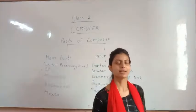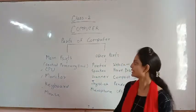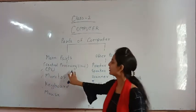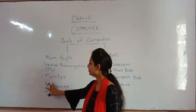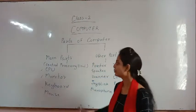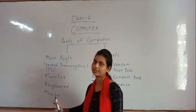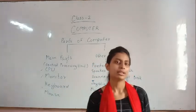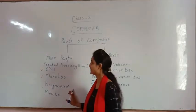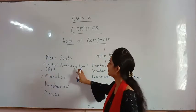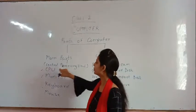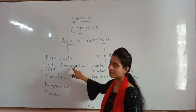Main parts are those parts which, if you miss even one — for example, if you miss the monitor, you will not be able to work on the computer. Without a monitor, you can't see what you type. These main parts include the CPU, which stands for Central Processing Unit. The CPU is also known as the brain of the computer.